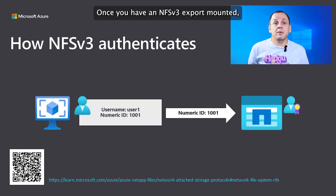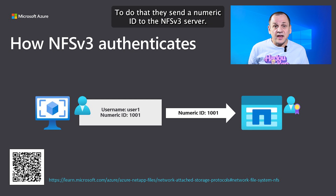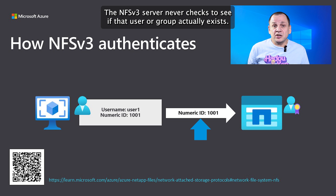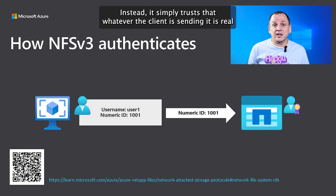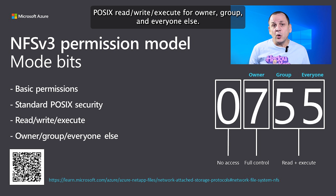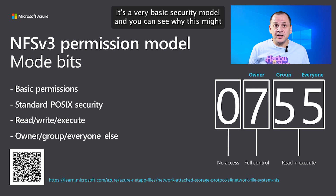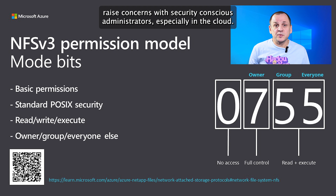Once you have an NFSv3 export mounted, users and groups authenticate by sending a numeric ID to the NFSv3 server. The server never checks to see if that user or group actually exists — it simply trusts whatever the client sends. File and folder permissions are set with basic POSIX read, write, execute for owner, group, and everyone else. There's no real granularity, making it a basic security model that raises concerns for security-conscious administrators, especially in the cloud.